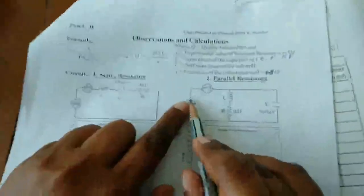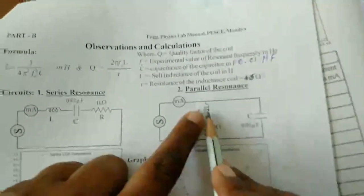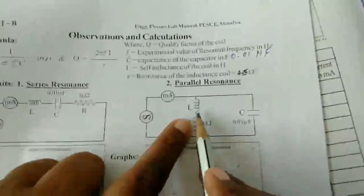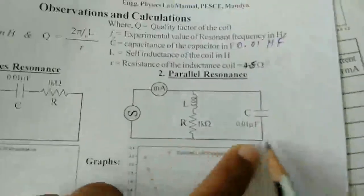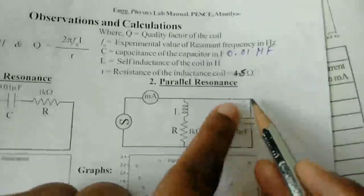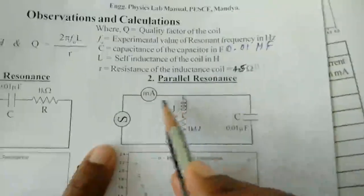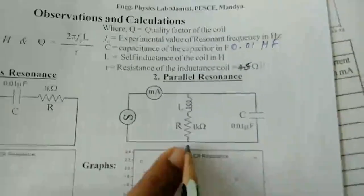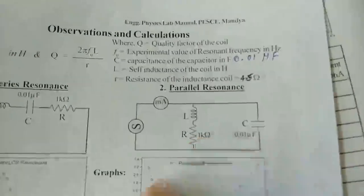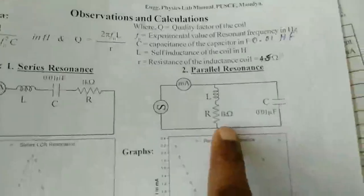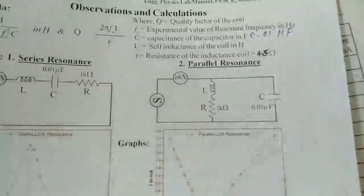For the parallel resonance circuit, the AC oscillator source is connected to the milliammeter. The milliammeter's other end is connected to the inductor. The inductor's other terminal is connected to the resistor. The resistor's other terminal is connected to the capacitor. The capacitor's other terminal is connected back to the milliammeter. The source's other terminal is connected to the resistor. This is the parallel resonance circuit, and we set it up on the circuit board.